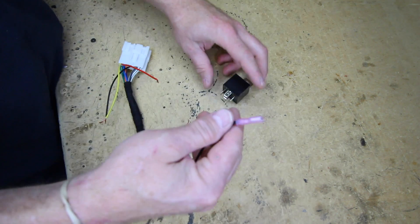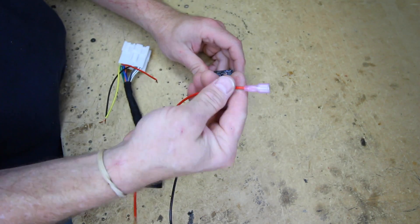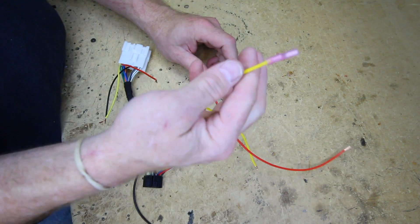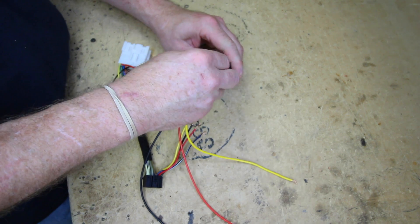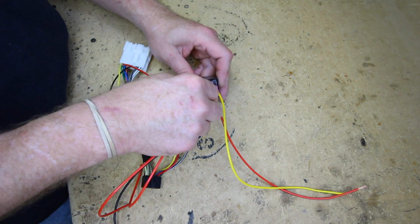What we want to do is take a ground, hook it up to 85. We're going to take an accessory wire and hook it up to 86. Constant 12 volts, we'll hook it up to 87. And then we'll have our double feed and we'll hook that up to 30.